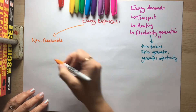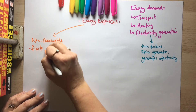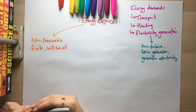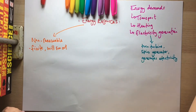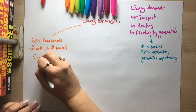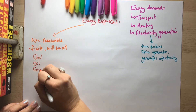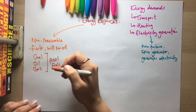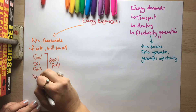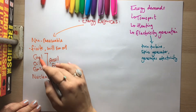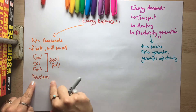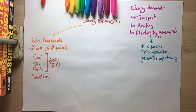In terms of energy resources, we have non-renewable energy resources. This means they are finite — they will run out — because we're using them at a faster rate than they can be replenished. The non-renewables are coal, oil, and gas — these are all fossil fuels, taking millions of years to form — and then we have nuclear power, which is also finite but is not a fossil fuel.